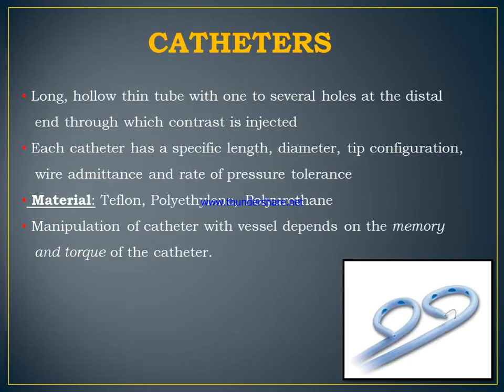A catheter is a pipeline or tube-like structure made of polyurethane or polyethylene — a hollow structure used for the administration of medications or contrast into vessels or other parts of the body. It is a long, hollow, thin tube with several holes at the distal end through which contrast is injected. Each catheter has a specific length, diameter, tip configuration, and pressure tolerance. Materials include Teflon, polyethylene, and polyurethane. Catheter manipulation depends on its memory and torque.